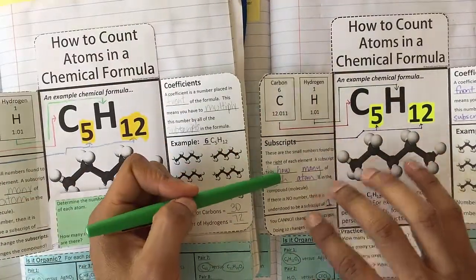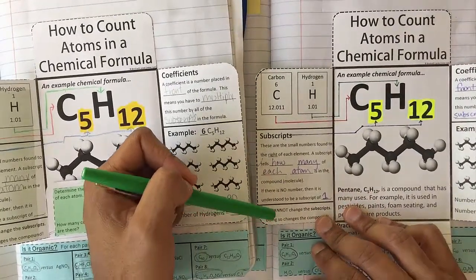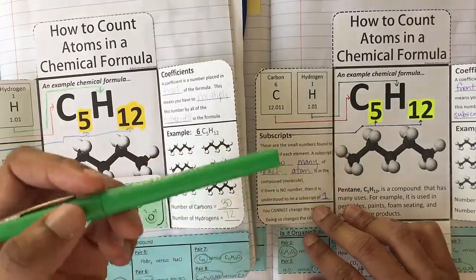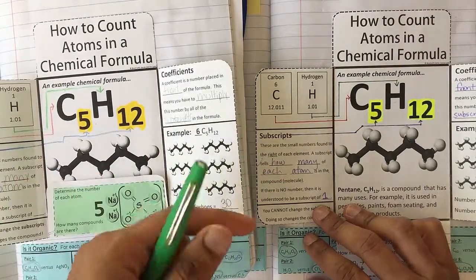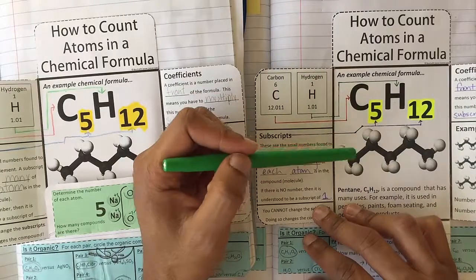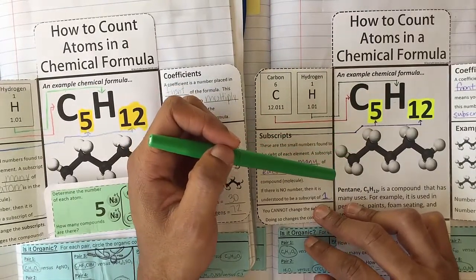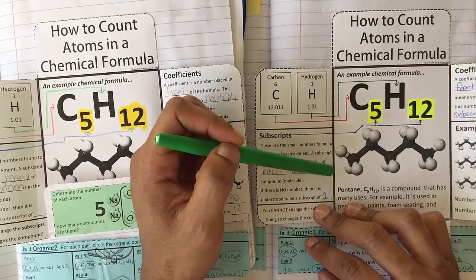After I talk about that, I actually give them an example because right here at the bottom it tells them that they can't change subscripts. And I stress that by writing carbon monoxide on the board and carbon dioxide on the board. And I talk about, you can't change them. If you change a subscript, then you're changing the compound. And sometimes compounds have different chemical and physical properties from one another.